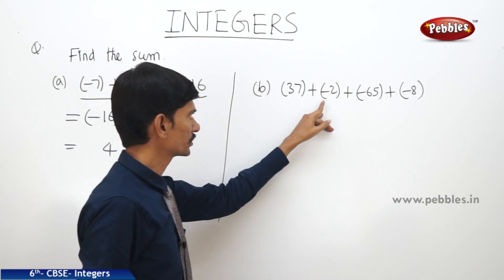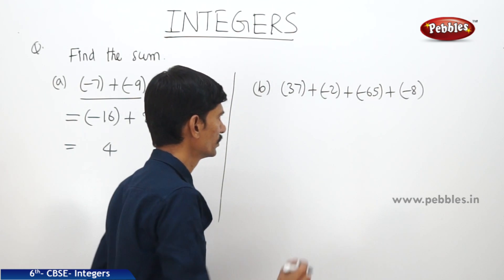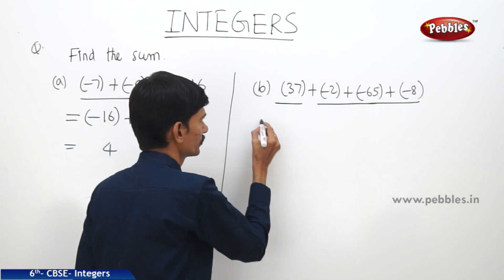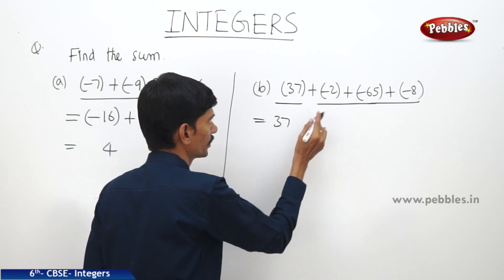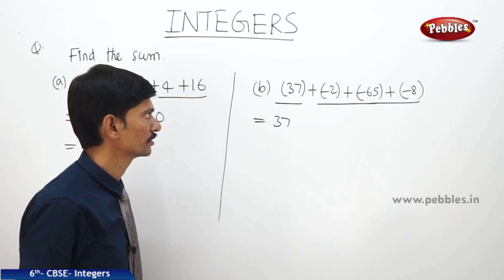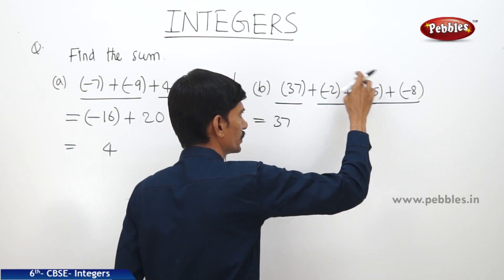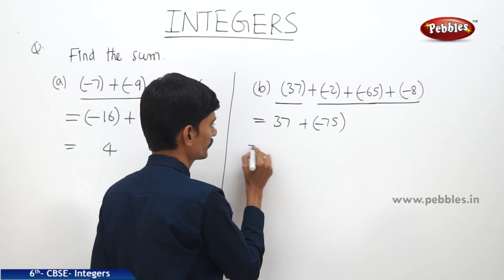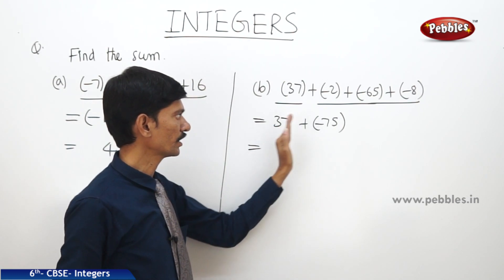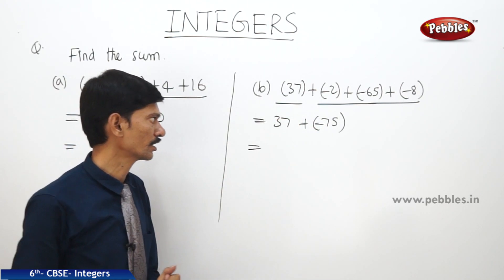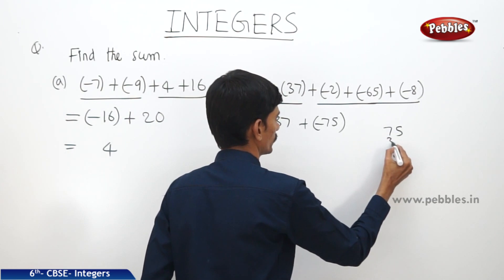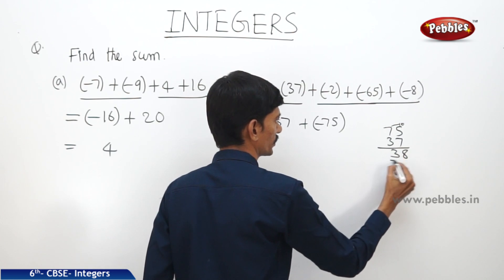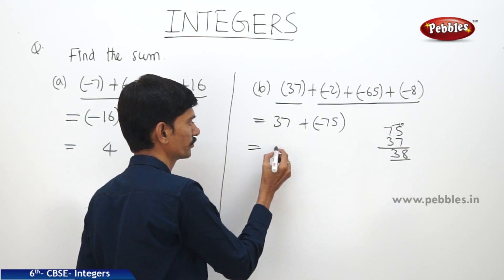In the second question: 37 plus (-2) plus (-65) plus (-8). The first integer is positive and the last three are negative. We add the three negatives as whole numbers: 8 plus 2 is 10, plus 65 is 75, with a minus sign giving minus 75. Then 37 plus (-75): subtract 37 from 75 to get 38. The bigger number 75 has minus sign, so the answer is minus 38.